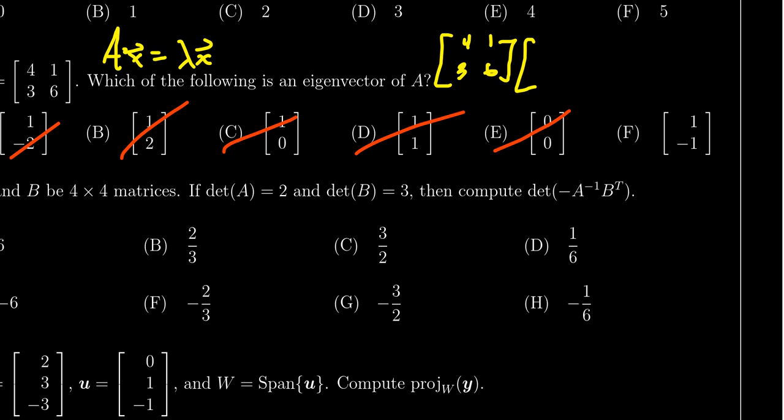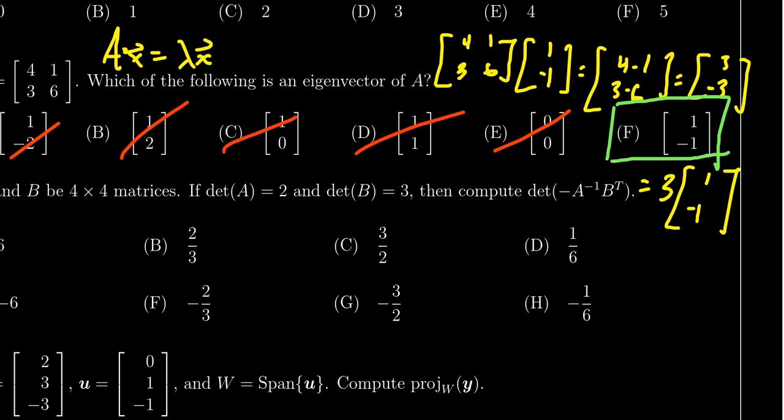It seems by process of elimination F is probably the correct answer, but we should check it just to make sure. If we try F, with the matrix product we get four minus one and three minus six, which gives three and minus three. Notice that is actually a scalar multiple of F. If you factor out the three, you get back one and negative one. So we see that one, negative one is an eigenvector associated to the eigenvalue three. Choice F was the correct response, and we found that by elimination.